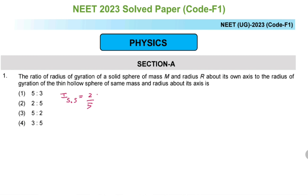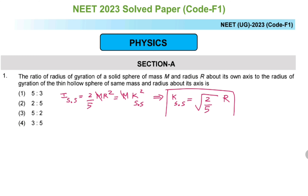The moment of inertia for a solid sphere about its central axis is (2/5)mr². The same formula in terms of radius of gyration will be mk². Mass cancels out on both sides, and taking the square root, k for the solid sphere equals √(2/5) times its radius R.